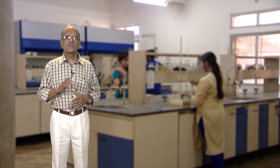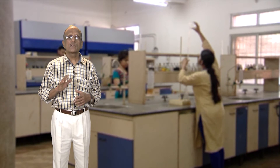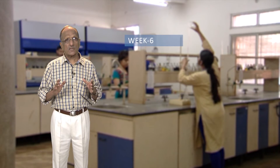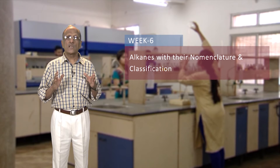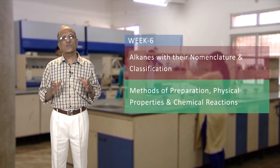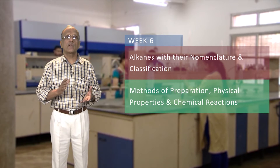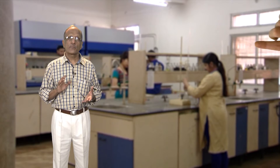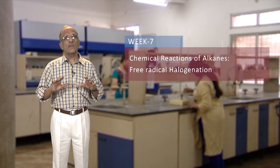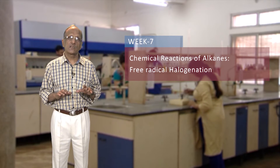The sixth, seventh, and eighth weeks will be dedicated to understanding aliphatic hydrocarbons. We shall discuss alkanes first, with their nomenclature and classification, followed by methods of their preparation, physical properties, and chemical reactions in the sixth week. In the seventh week, we will continue with some more chemical reactions of alkanes, such as free-radical halogenation.